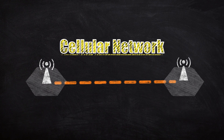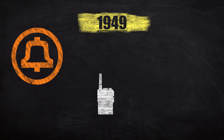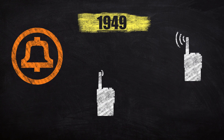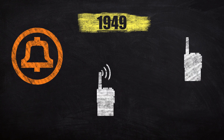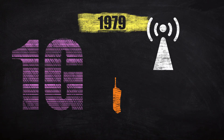Hello, in this video we will look at the cellular network. Cellular technology was developed by Bell Systems in the late 1940s, partially due to advancements made in the two-way radio during the Second World War.